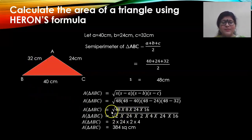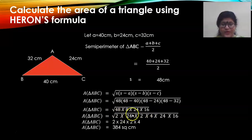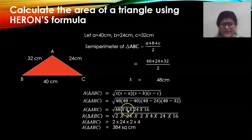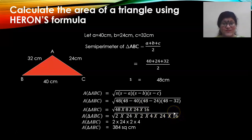Now, do not multiply these numbers — you are going to find out their square root, so split them up. Either split in terms of prime numbers, or write 48 as 2 into 24, because there is already one 24 here. So 2 into 24. Write 8 as 2 into 4. Write 24 as it is. And 16 as it is, because you can take out the square root of 16.